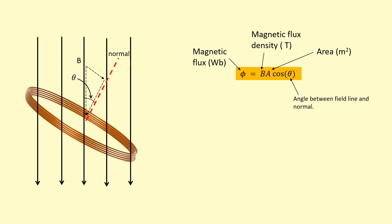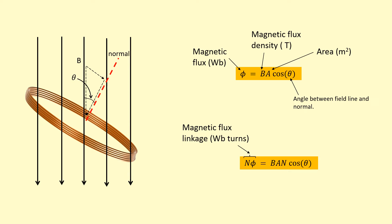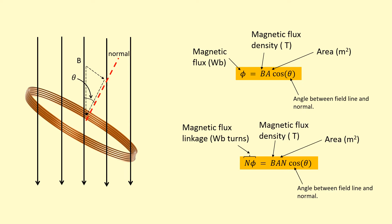If we've got more than one turn of the coil, we can calculate the magnetic flux linkage, which is simply the magnetic flux times the number of turns. The magnetic flux linkage is in Weber-turns, and the equation gains N, the number of turns of the coil. Please don't say 'number of coils' — it's number of turns of the coil.